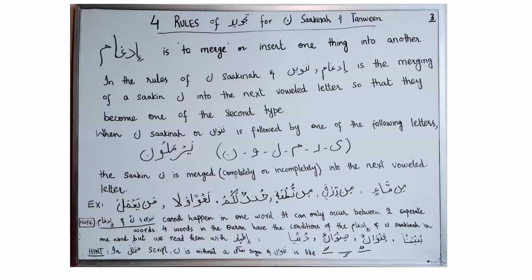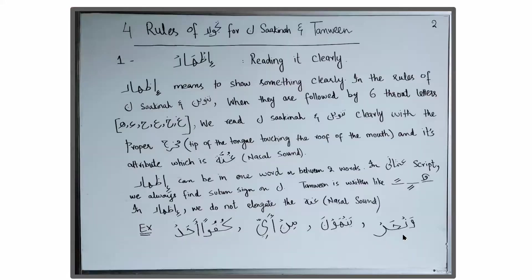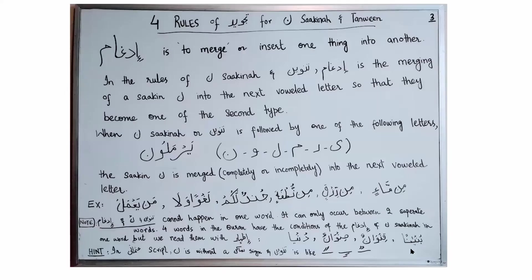In the Othmani script, when Idgham is happening, Noon Sakina does not have any Sukun or Jazm sign on it. Tanween is also written slightly differently in the case of Idgham: the two parallel lines are one after another for Fathatain and Kasratain, whereas normally they are aligned with each other. The shape of Dhammatain is also different in the case of Idgham.